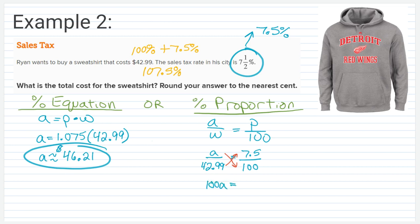100 times A is going to be 100A. Seven and a half times 42.99 is going to be 322.425. And then we're going to divide both sides by 100. And so when I divide this by 100, we end up with $3.22 approximately. So $3.22.